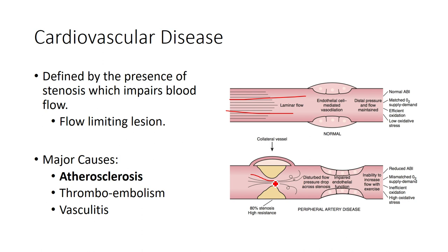There are major contributors to this stenosis and narrowing of the vessels. Atherosclerosis is considered the primary cause. We can also have acute causes like thromboembolism — someone who has a blood clot that embolizes. It could also be vasculitis, or other structural changes to the heart. But in the context of cardiovascular disease, we're really thinking about atherosclerosis.